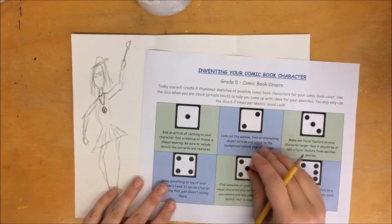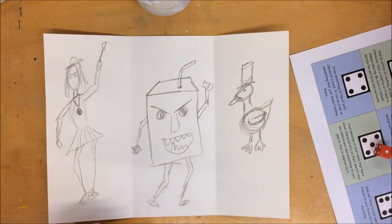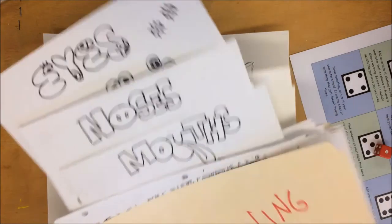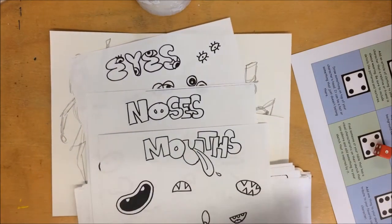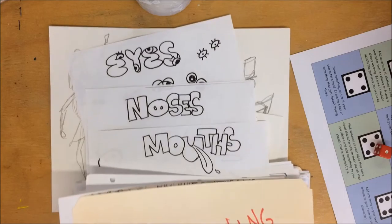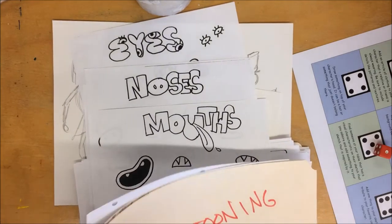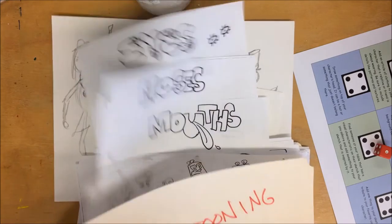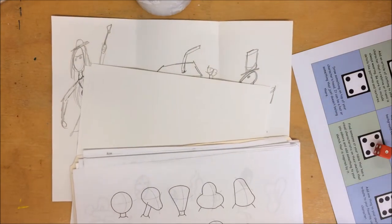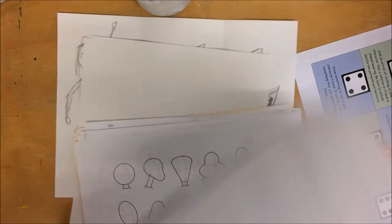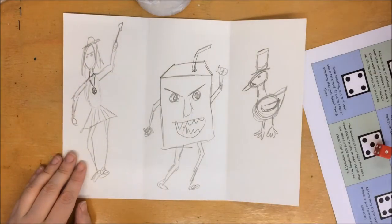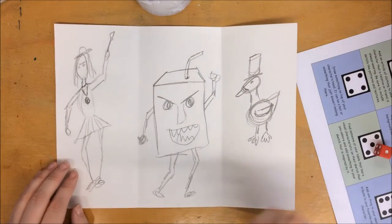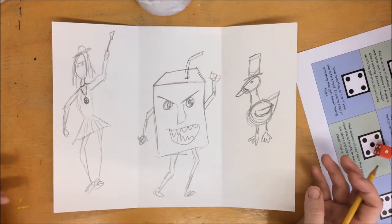We also have a cartooning folder that has all kinds of stuff in it: ideas for eyes, noses, mouths, finished comic book characters that you may recognize from TV. So you can just go through here and get lots of different examples if you get stuck. Another thing that you can do is just kind of take a look around the room, see what people are doing. Maybe you'll gain inspiration from a classmate.